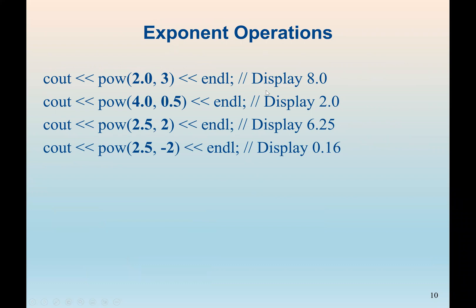We also have exponent operations. In C++, we use the power function to find a value raised to a power. The function pow() takes two arguments: the first is the base and the second is the exponent. So pow(2.0, 3) means 2 to the power 3. pow(4.0, 0.5) means 4.0 to the power 0.5, which is the same as a square root, since a square root equals a power of one half.